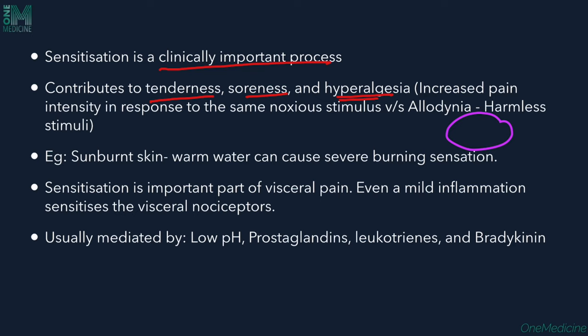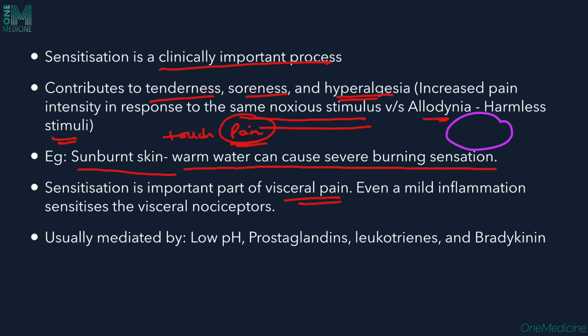Hyperalgesia is increased pain intensity in response to the same noxious stimulus, whereas allodynia is when harmless stimuli causes pain. An example of hyperalgesia: sunburned skin where even lukewarm water causes severe burning sensation. Sensitization is also important in visceral pain — even mild inflammation sensitizes visceral nociceptors, mediated by low pH, prostaglandins, leukotrienes, and bradykinin.